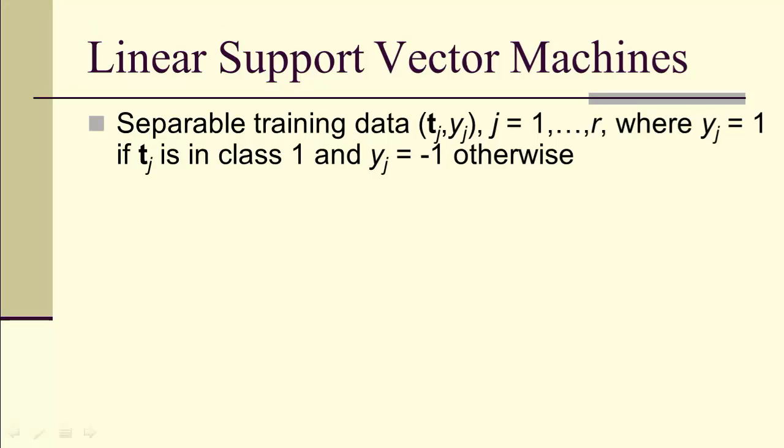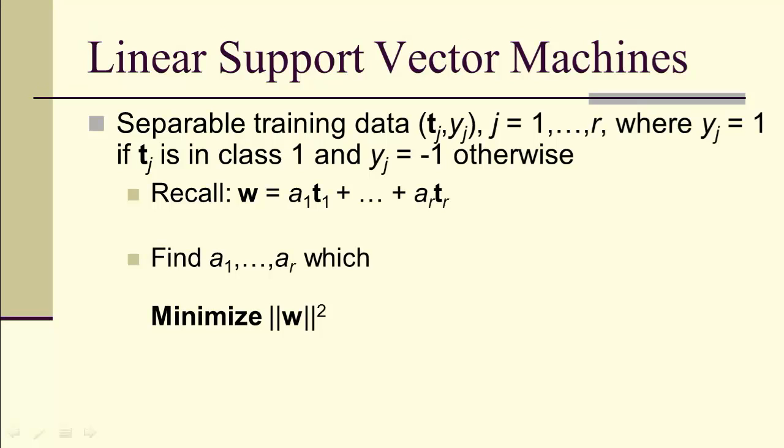First thing we're going to do is change so that y_j equals 1 if t_j is in class 1, and y_j equals negative 1 otherwise. Recall our w is a linear combination of our feature vectors, t_1 up to t_r, our patterns.